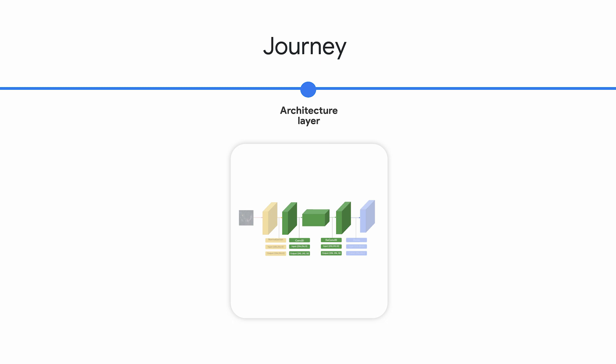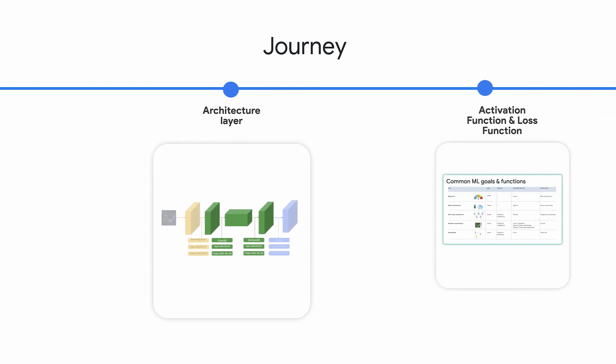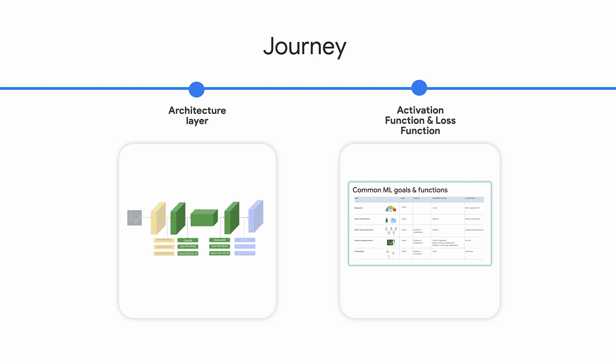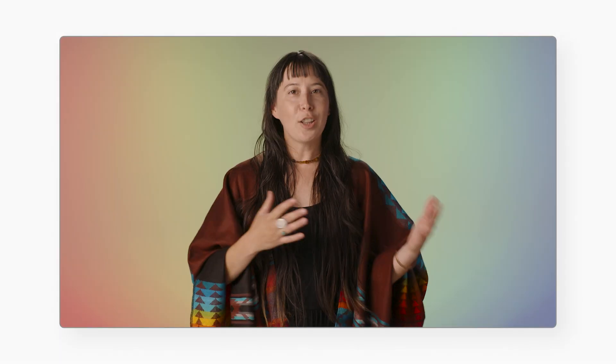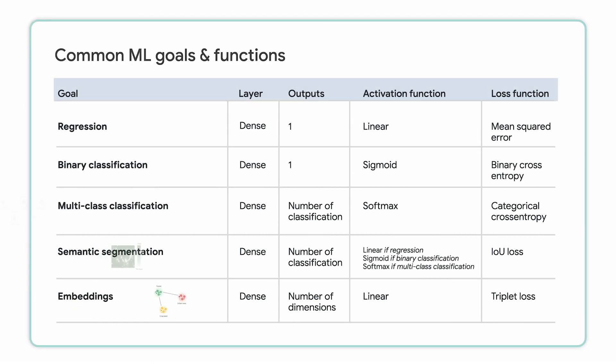We then reach the fourth and last layer. Depending on our goals at the beginning, we choose an appropriate loss function that helps us score how well the model did during training. A larger loss, for example, means it has room for improvement. The model adjusts to do better the next time it sees that example. Here's a handy-dandy table, by the way, with our recommended activation and loss functions to choose from based on your goal. We hope this saves you time.